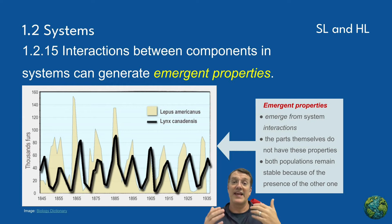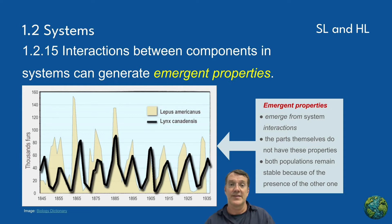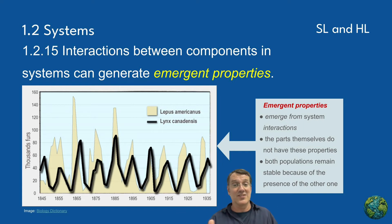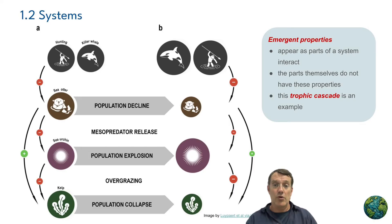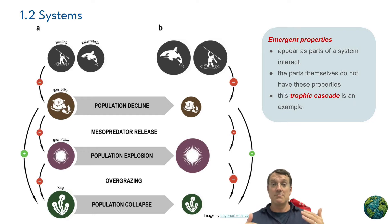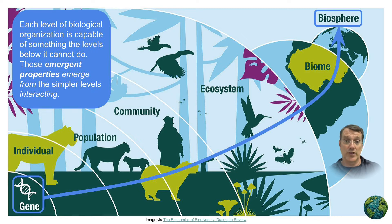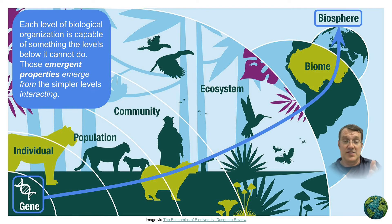Emergent properties are characteristics that arise from the interactions between components in a system which the individual parts themselves don't possess. In ecology, population cycles and food web dynamics are examples of emergent properties. The classic lynx-hare population cycle emerges from the predator-prey interaction — neither species alone would show this cyclical behavior. Trophic cascades are another example where changes at one trophic level can have far-reaching effects throughout the ecosystem, emerging from the complex interactions between species at different levels in the food web. At each level of biological organization, from molecules to individuals to communities to ecosystems to biomes, new properties emerge that couldn't be predicted solely from studying the level below. This concept highlights the importance of studying systems as a whole, not just their individual parts.